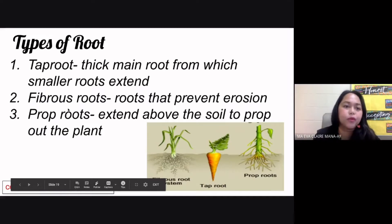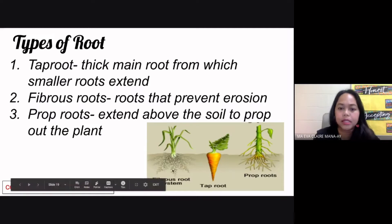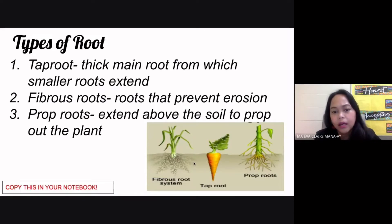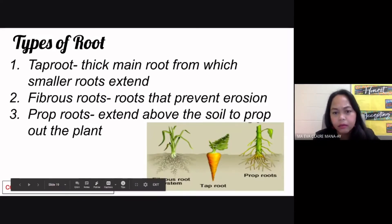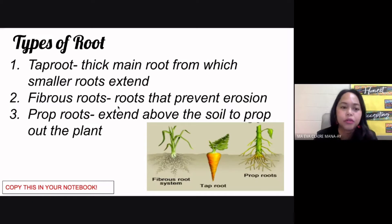Another type of root is your fibrous roots, and these types of roots prevent erosion. This is an example of your fibrous root system. You can find this in your monocots like your corn, rice, sugar cane, even banana and some other monocots. So again, the fibrous root system prevents erosion.